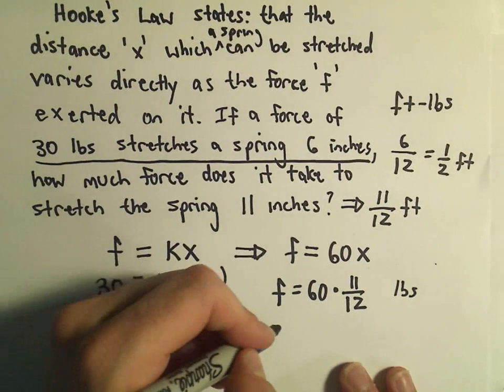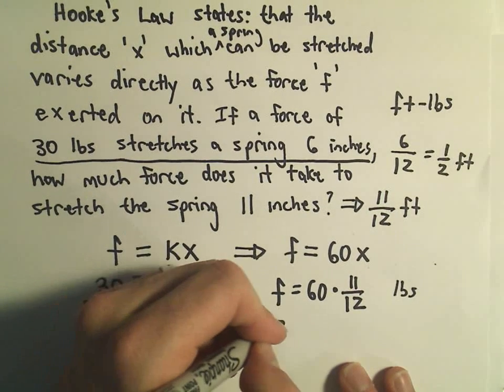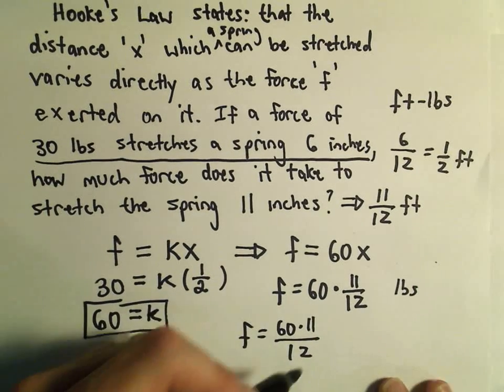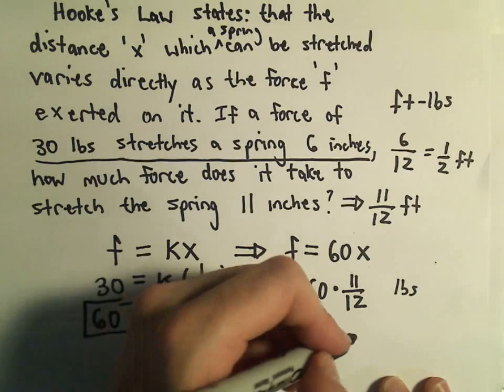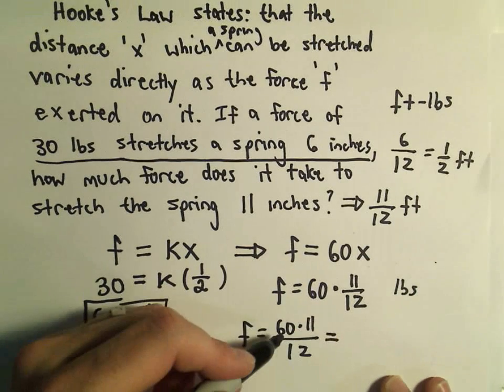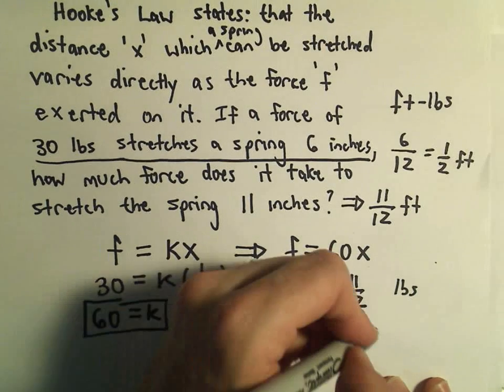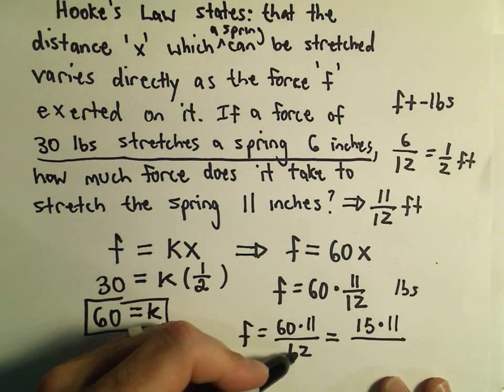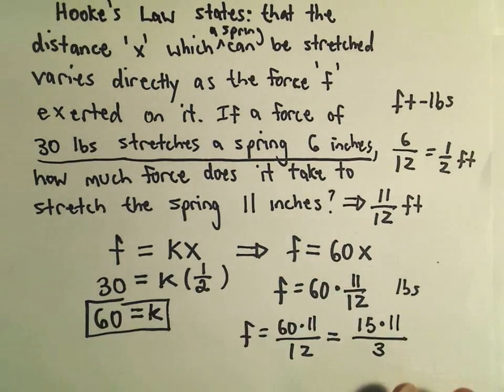So we could simplify this a little bit. That's 60 times 11 over 12. So I think 60 over 12, let's see, I think 4 goes into both of those numbers. 4 will go into 60 15 times, and 4 would go into 12 3 times. So I guess actually there's something a little bit better here we could use.